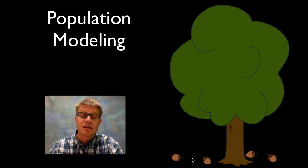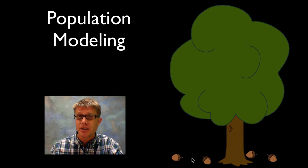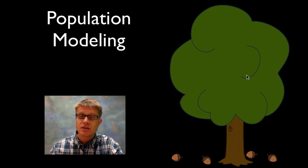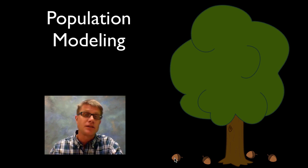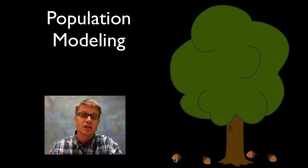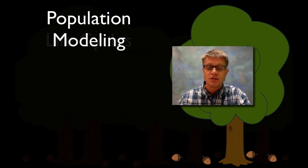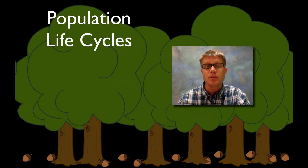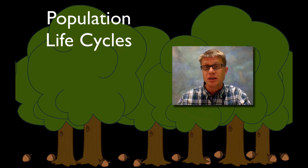Hi, it's Mr. Andersen and in this podcast I'm going to talk about population modeling. We're going to start by talking about what a population is, and before we can do that let's talk about what an individual is. Let's say this is an oak tree — an oak tree starts life as an acorn, that acorn will germinate, a little tree grows out of that, and eventually it's going to produce pollen and make more seeds and more acorns. A population is a group of organisms living in the same place at the same time, so let's say this is a group of oak trees living together.